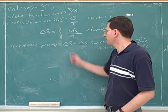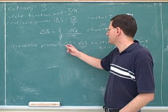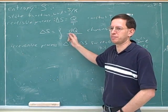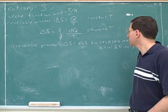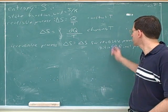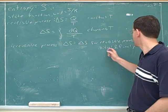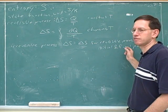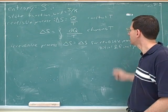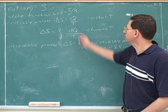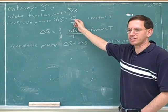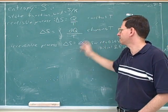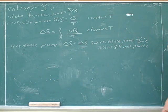We can't directly find the delta S for the irreversible process because these formulas don't apply, but we can simply look for a reversible process that has the same initial and final points as the process we care about. We can use these formulas for the reversible process, and then that same delta S would tell you the delta S for the irreversible process.